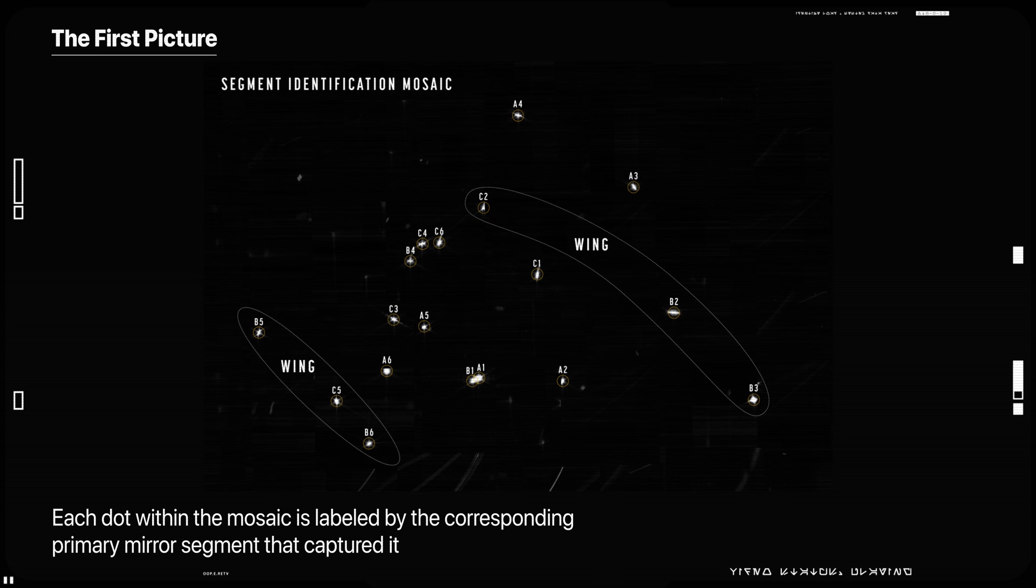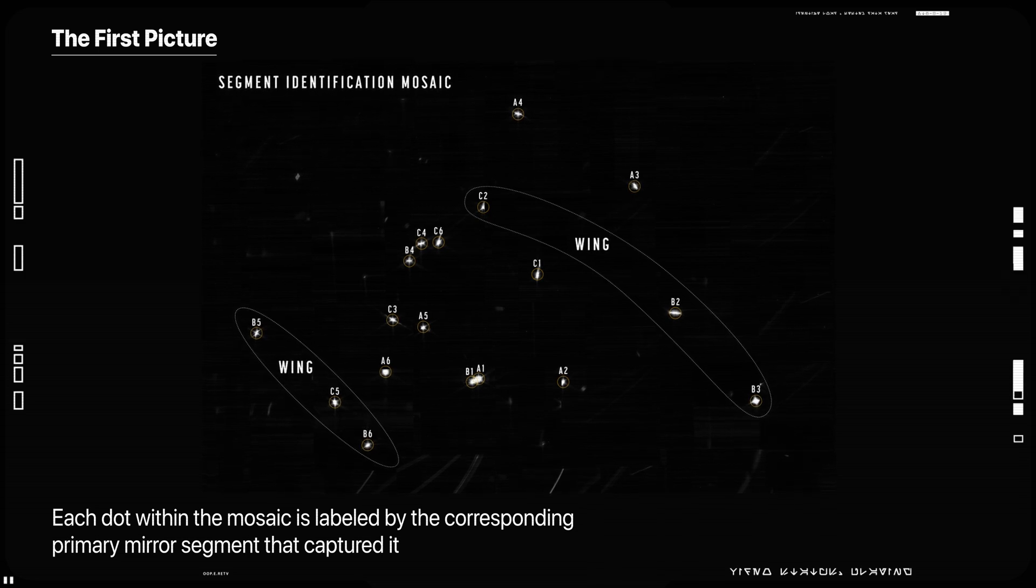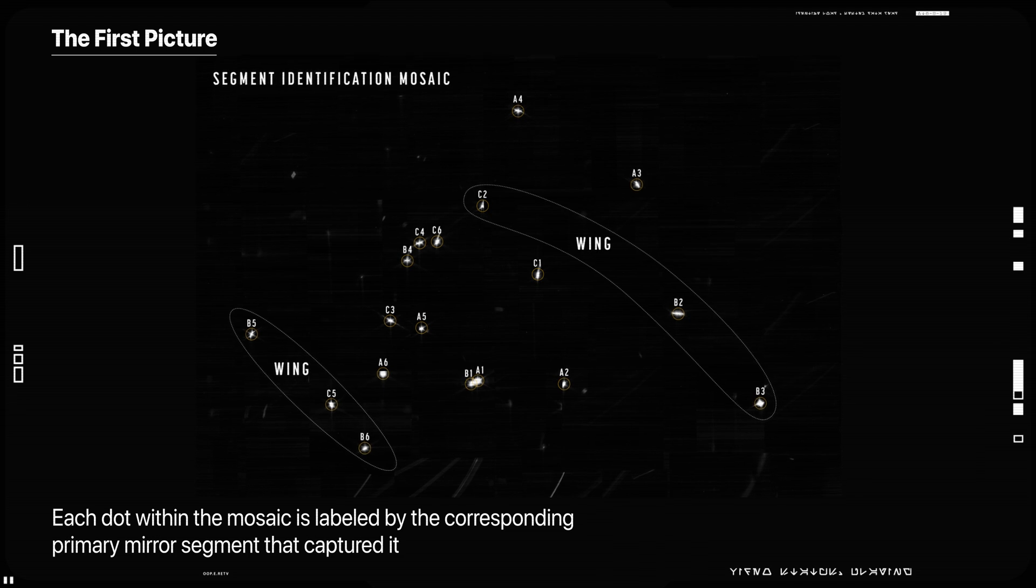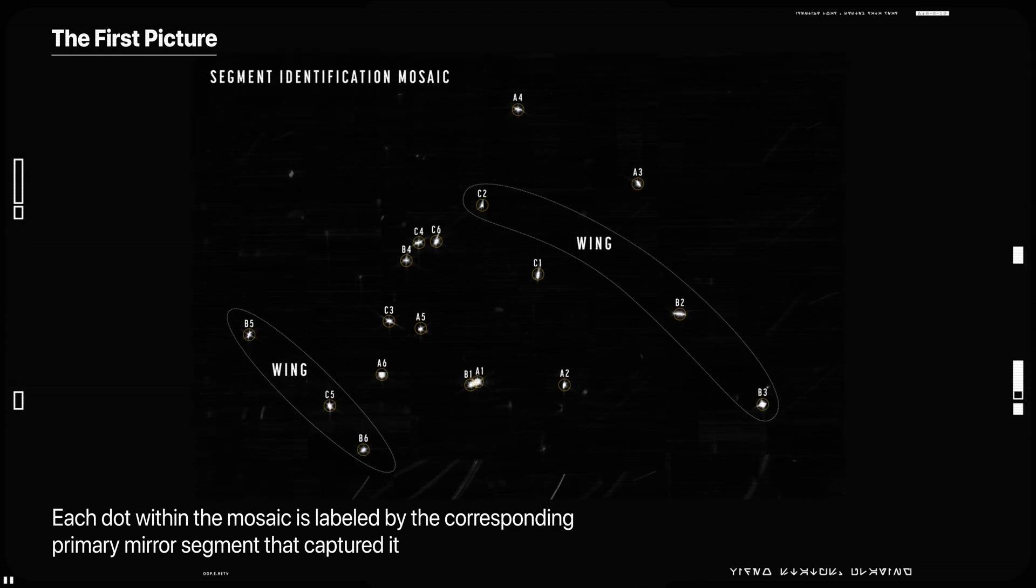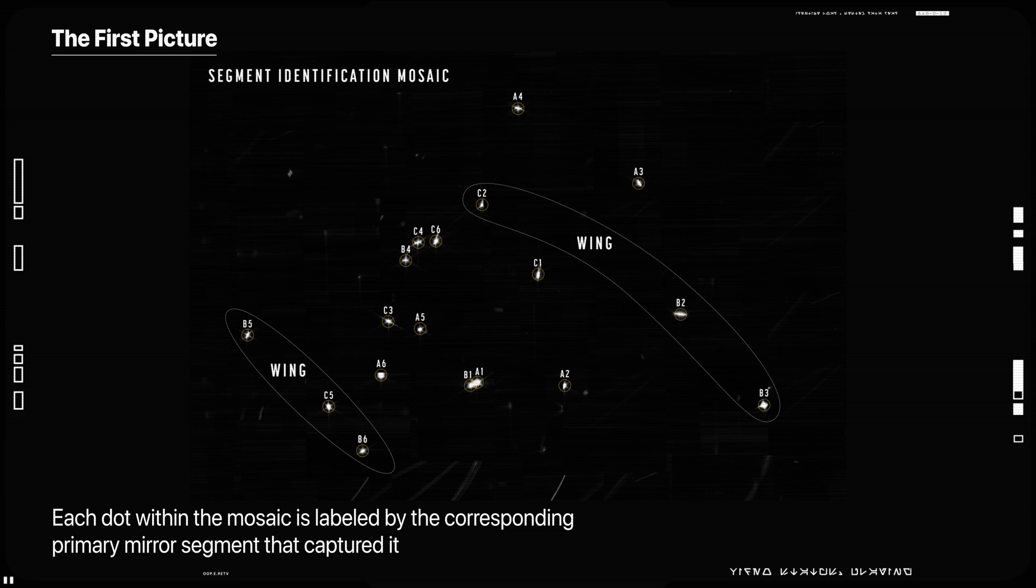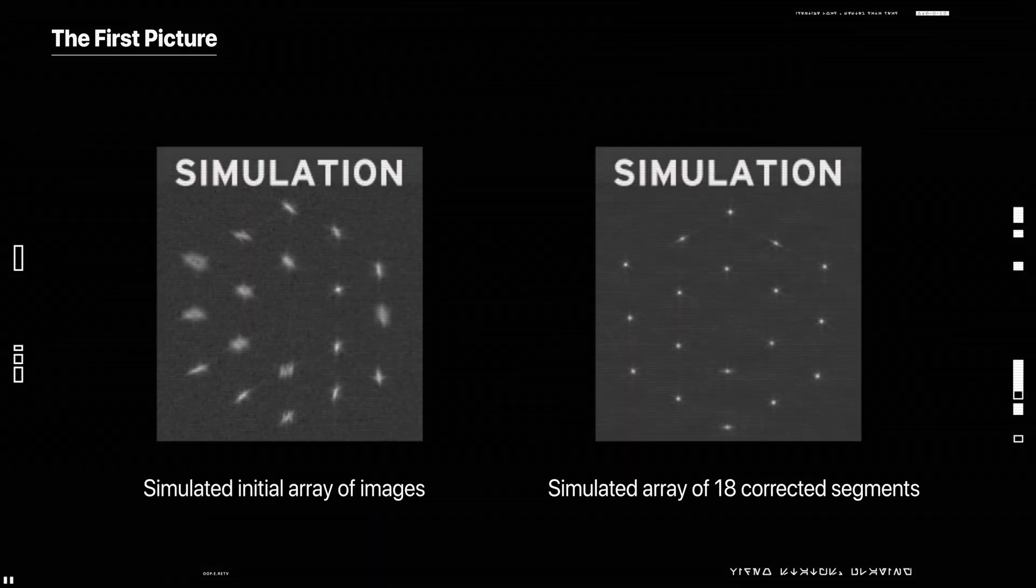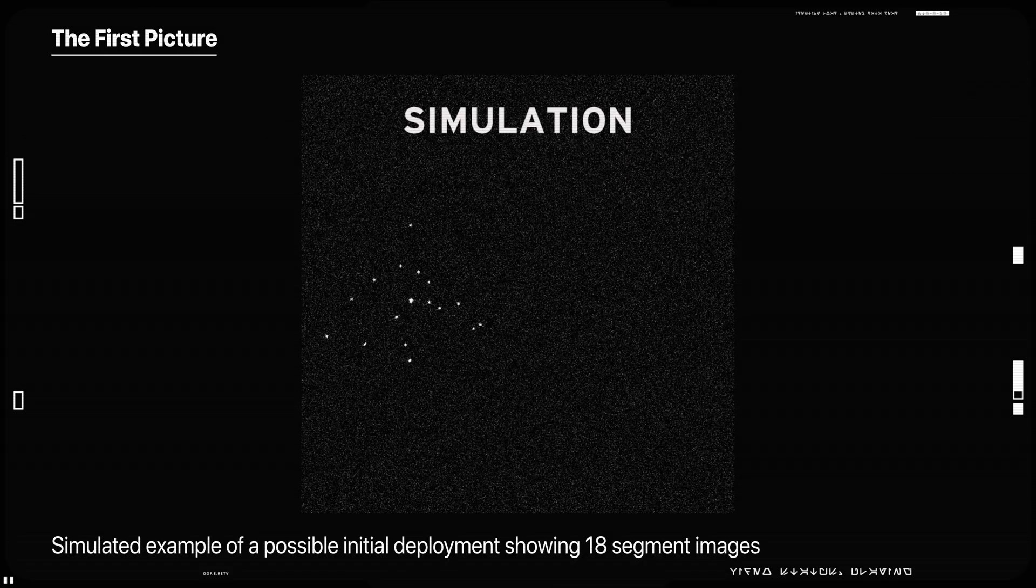The result is an image mosaic of 18 randomly organized dots of starlight, the product of Webb's unaligned mirror segments, all reflecting light from the same star back at Webb's secondary mirror and into NIR cam's detectors. These initial results closely match expectations and simulations.